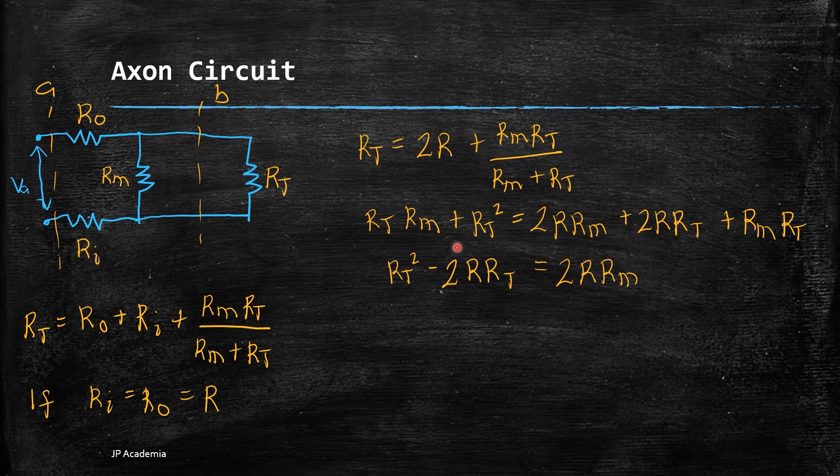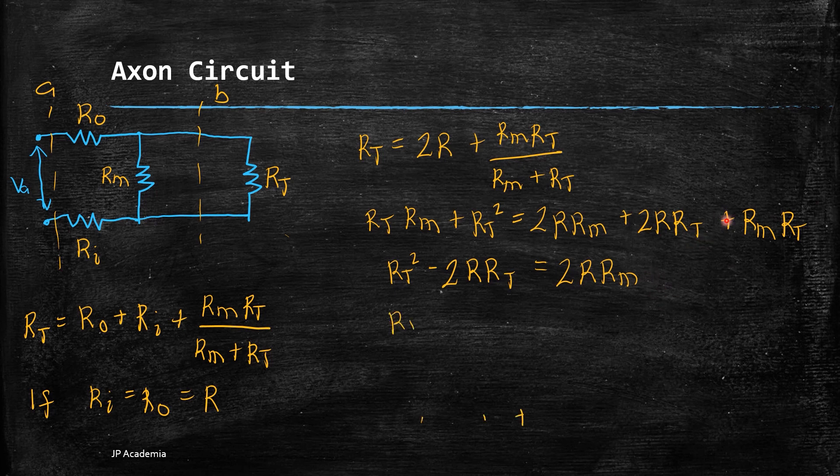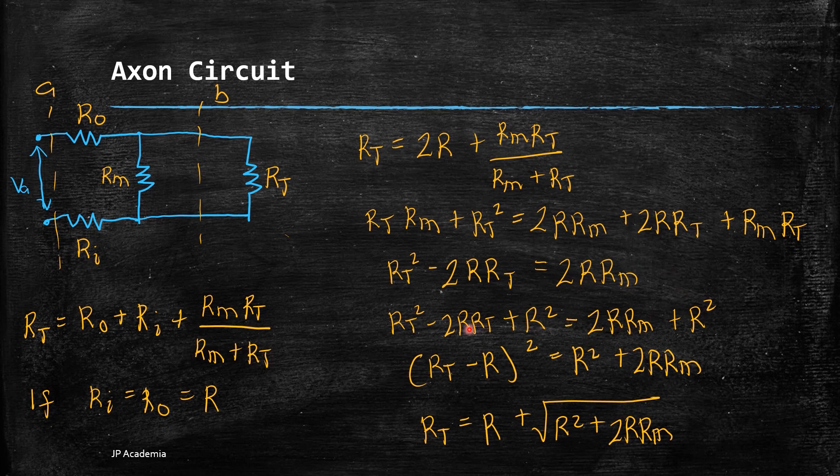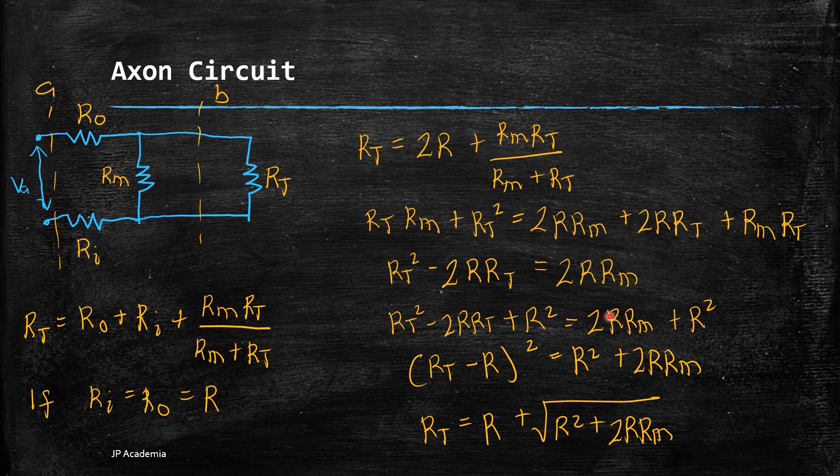Now, we can cancel this term to simplify our equation. We add R² to the right-hand side of our equation to further simplify in order to isolate R_T. Therefore, doing the algebra, we will get this final expression.